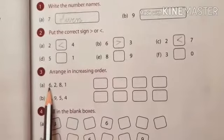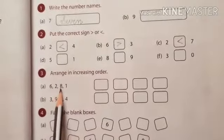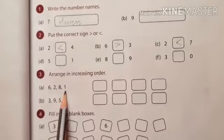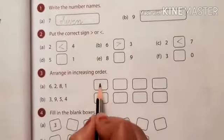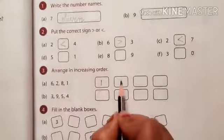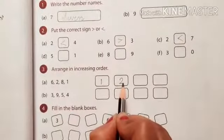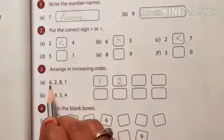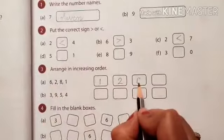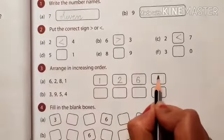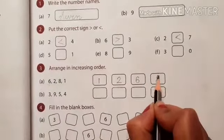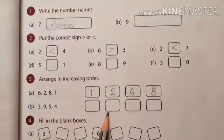So first number 6, 2, 8, 1. Smallest number is 1. So you write here. Then 2. So next number is 2. Again next 6. Then 8. Next sum will be done by you.